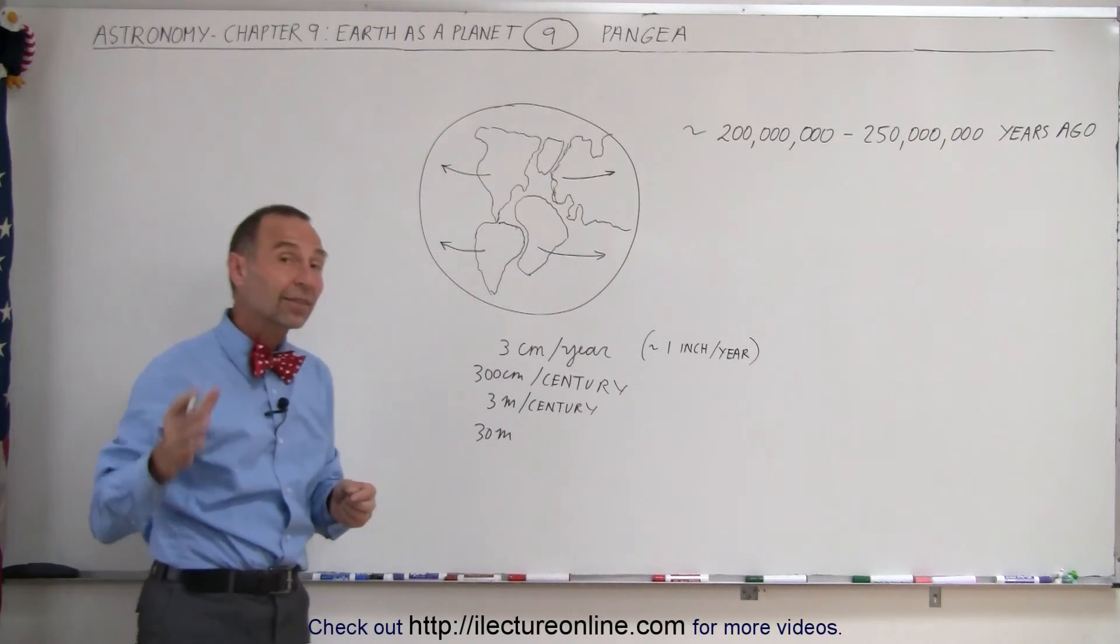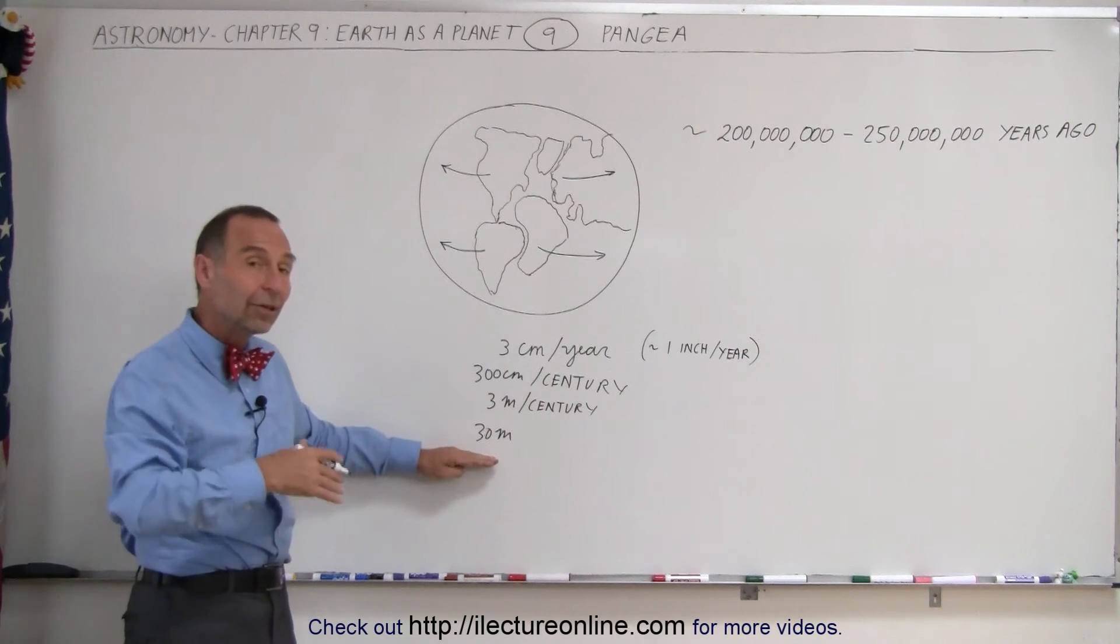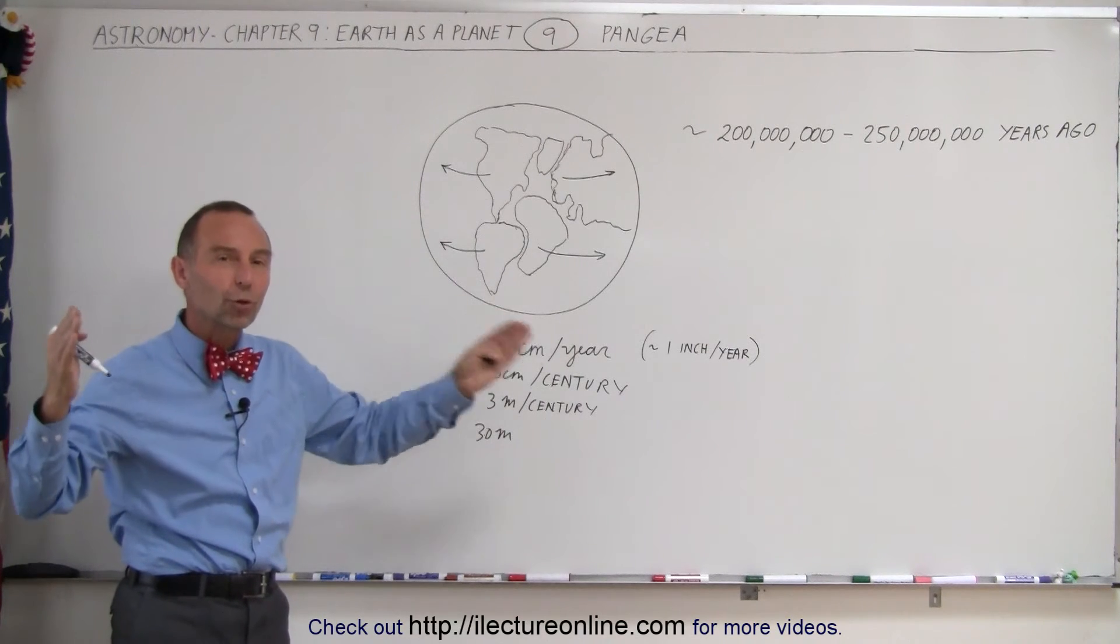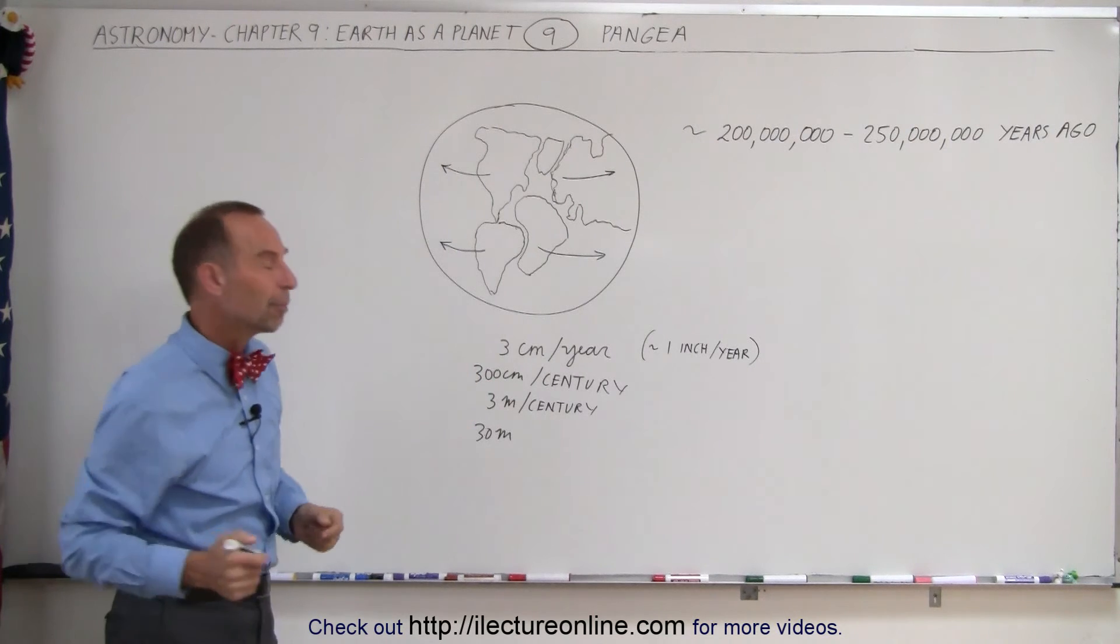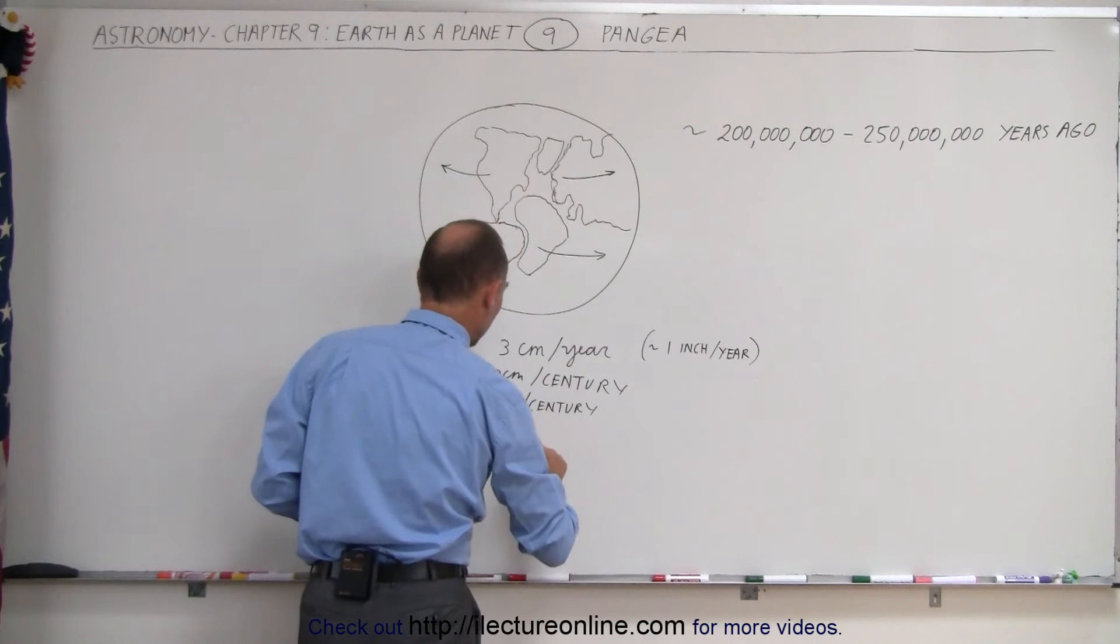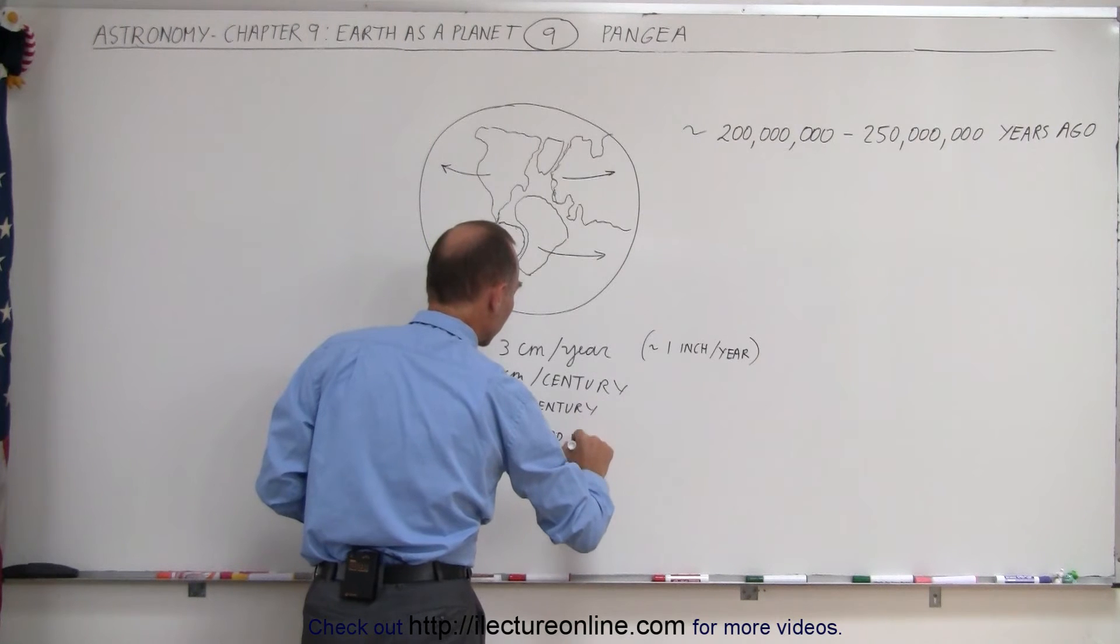So if we go back a thousand years in history to today, we can say that the North American continent and European continent are now 30 meters farther apart from one another. That would be 30 meters in one thousand years.